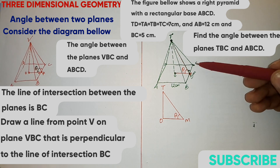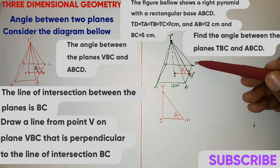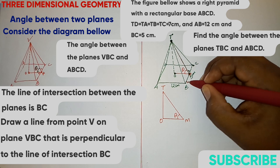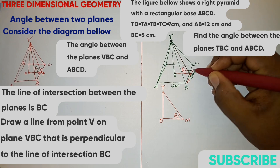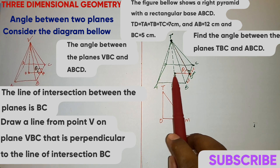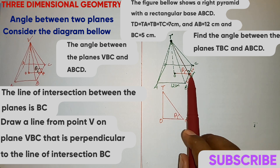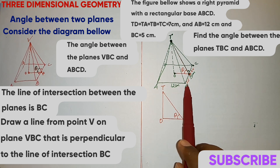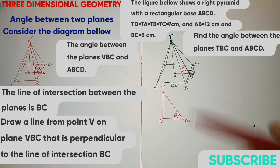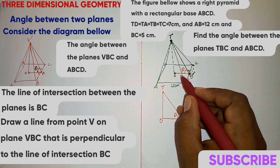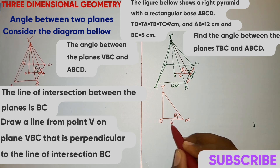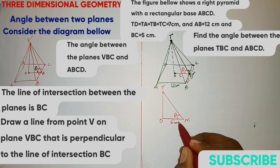M is the midpoint of B, C. So M divides B, C in two parts, so here we have 2.5 and here we have 2.5. Then O, M is half of A, B, so if A, B is 12, half of A, B will be 6, so O, M will be 6 centimeters.